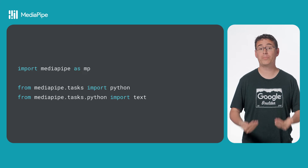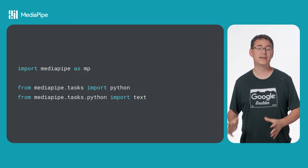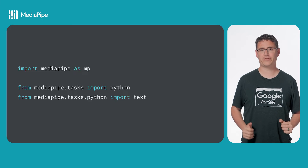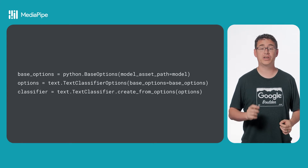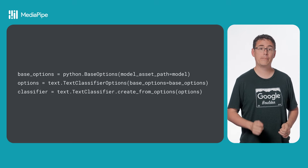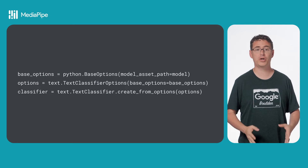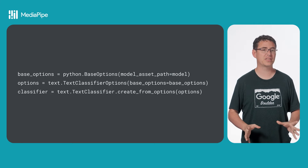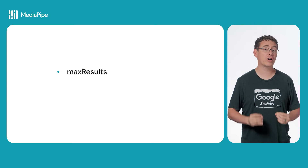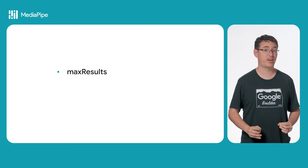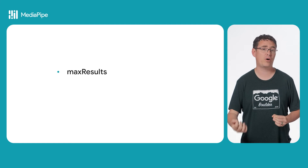Now let's get into a new Python file. You'll need to make sure you import this set of dependencies specifically for text classification with MediaPipe. After you have those, you can initialize your text classifier. Because this task is a lot more simple than the audio or visual task, I'm only going to set the model path here and then create the classifier.